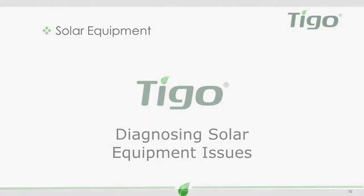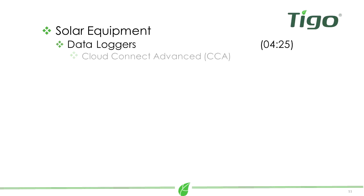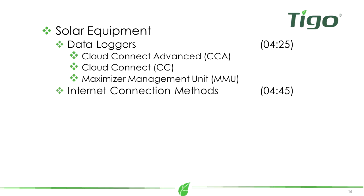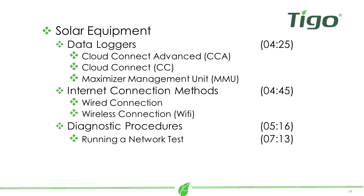If your other devices are accessing the internet, the trouble may be with your solar equipment. Tygo has three data loggers, and we will look at the different ways these data loggers can connect to the internet. We will show procedures for diagnosing internet connection problems and how to reset your solar power system.